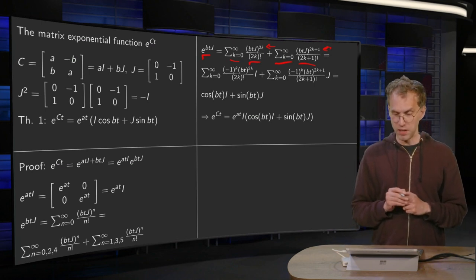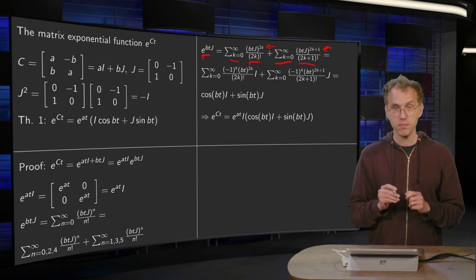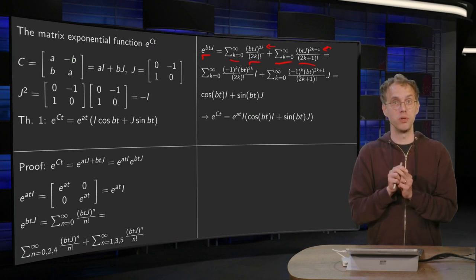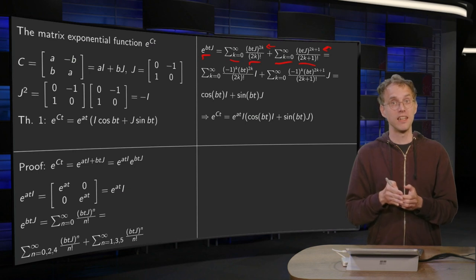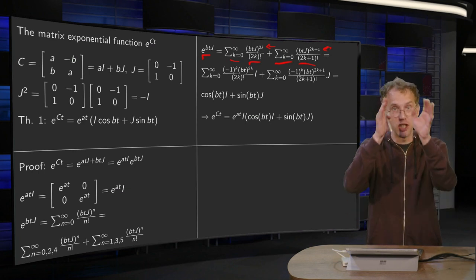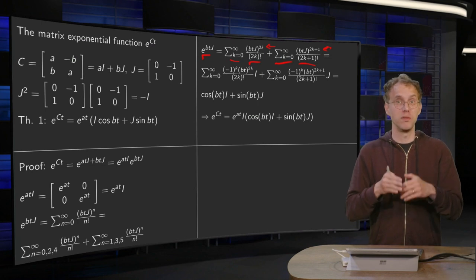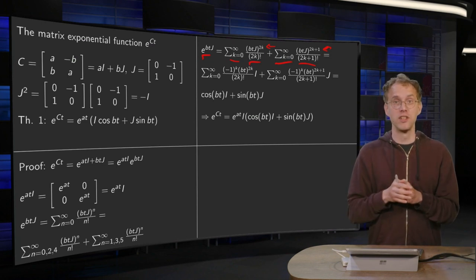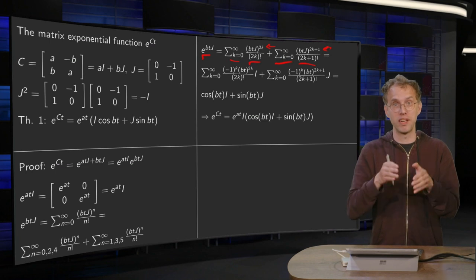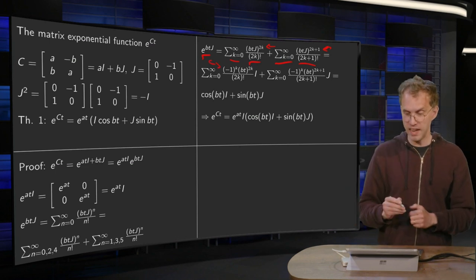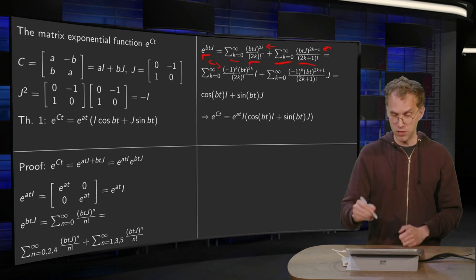And then we have the following trick. We have a j to the power 2k. But j to the power 2k can be written easier. That is j squared to the power k. But j squared is just minus identity. So we have minus identity to the power k. So that gives us a minus 1 to the power k, and identity to the power k is just identity.